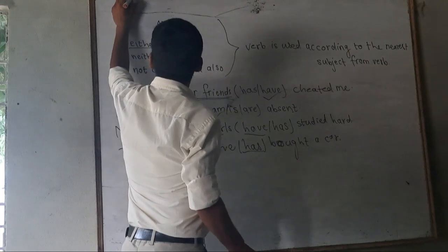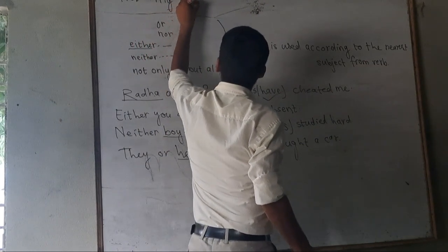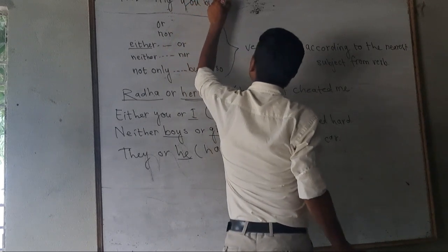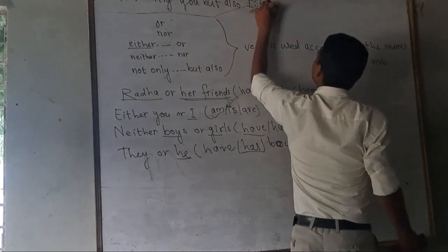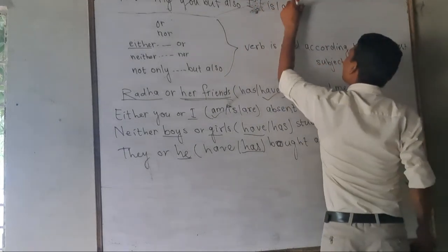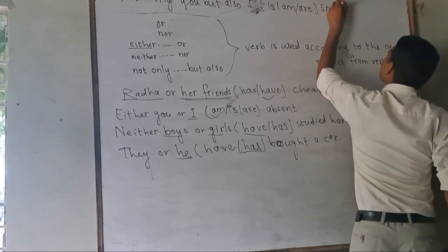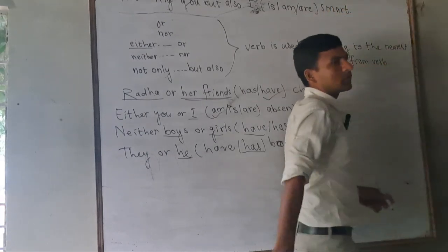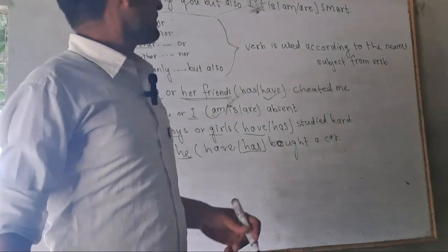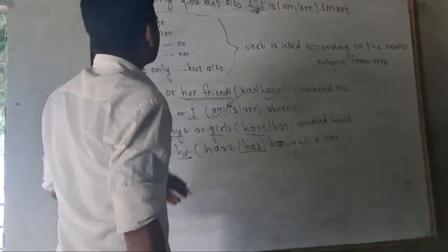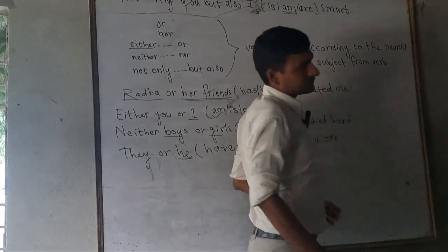Not only you but also I is, am, are smart. I am, is, am, are smart. Not only you but also I am, are smart. What is the word? How the word? I am smart. It's not.